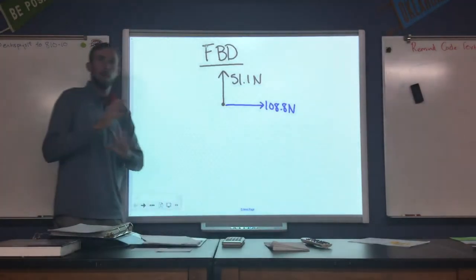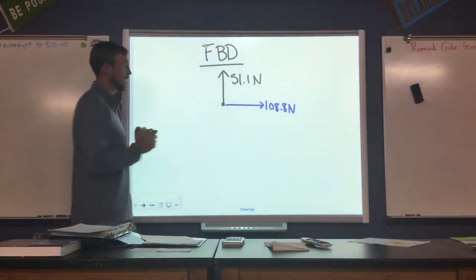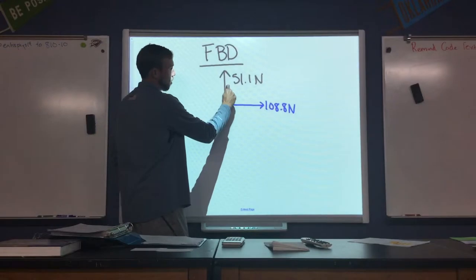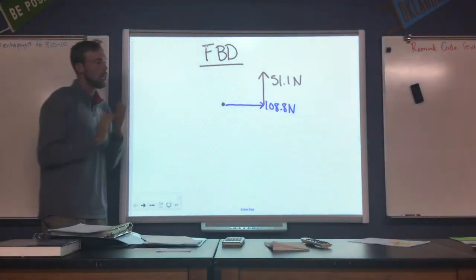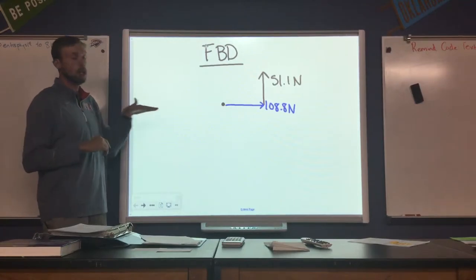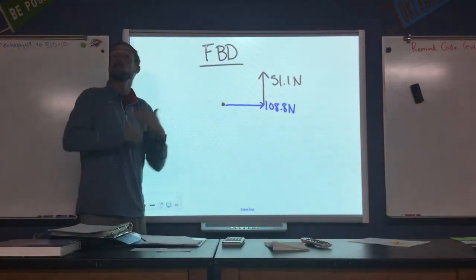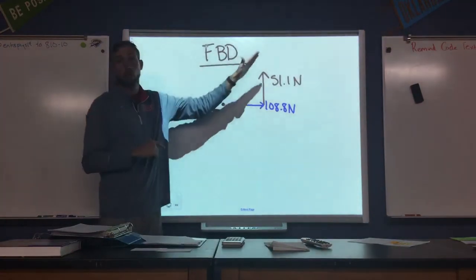So one way that we can actually help our picture make a little more sense is this. I'm going to take this 51.1 newtons and slide it over here, which is going to help us see that the ball is being kicked east and north. So the result should be our object moving northeast.